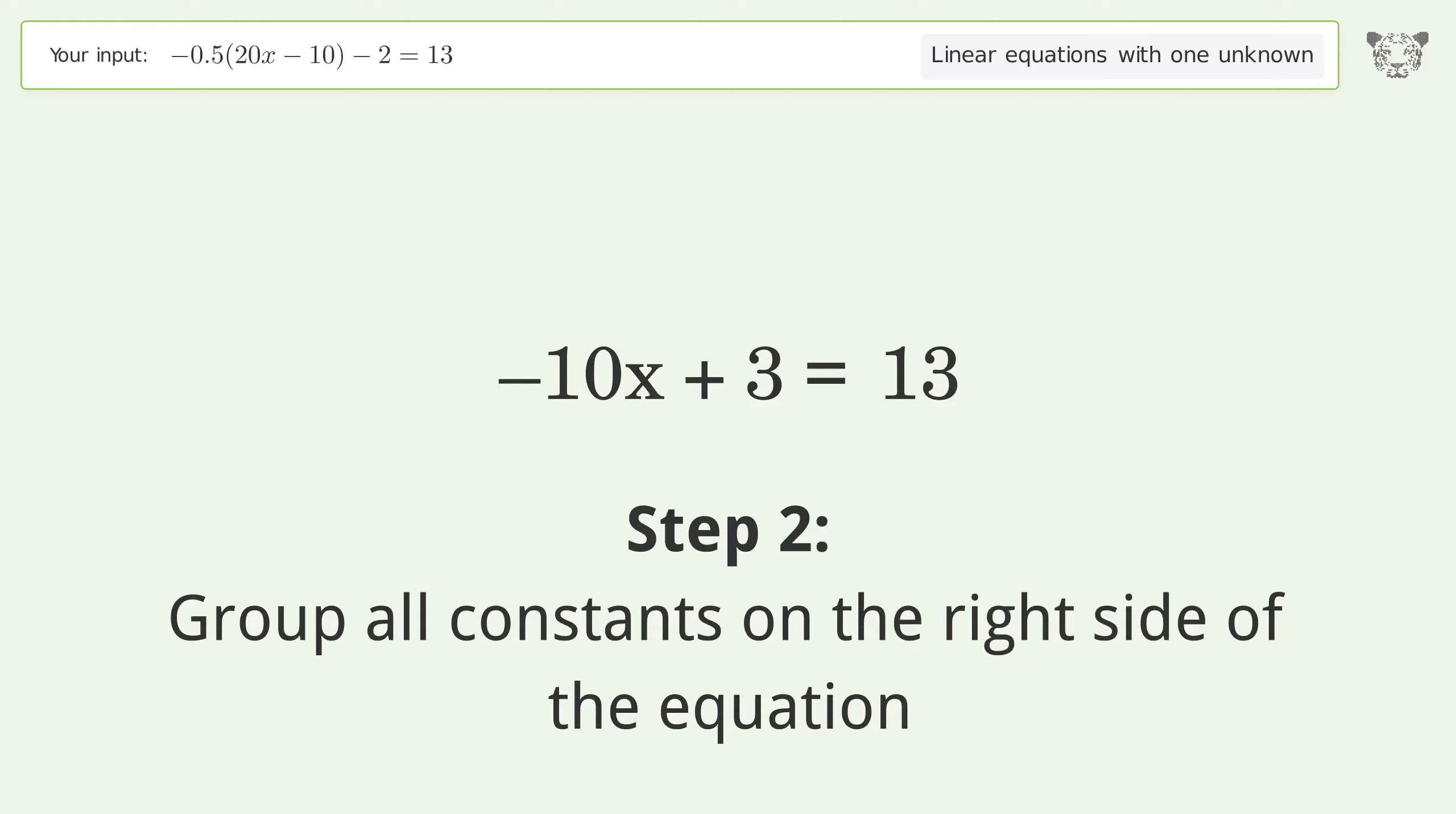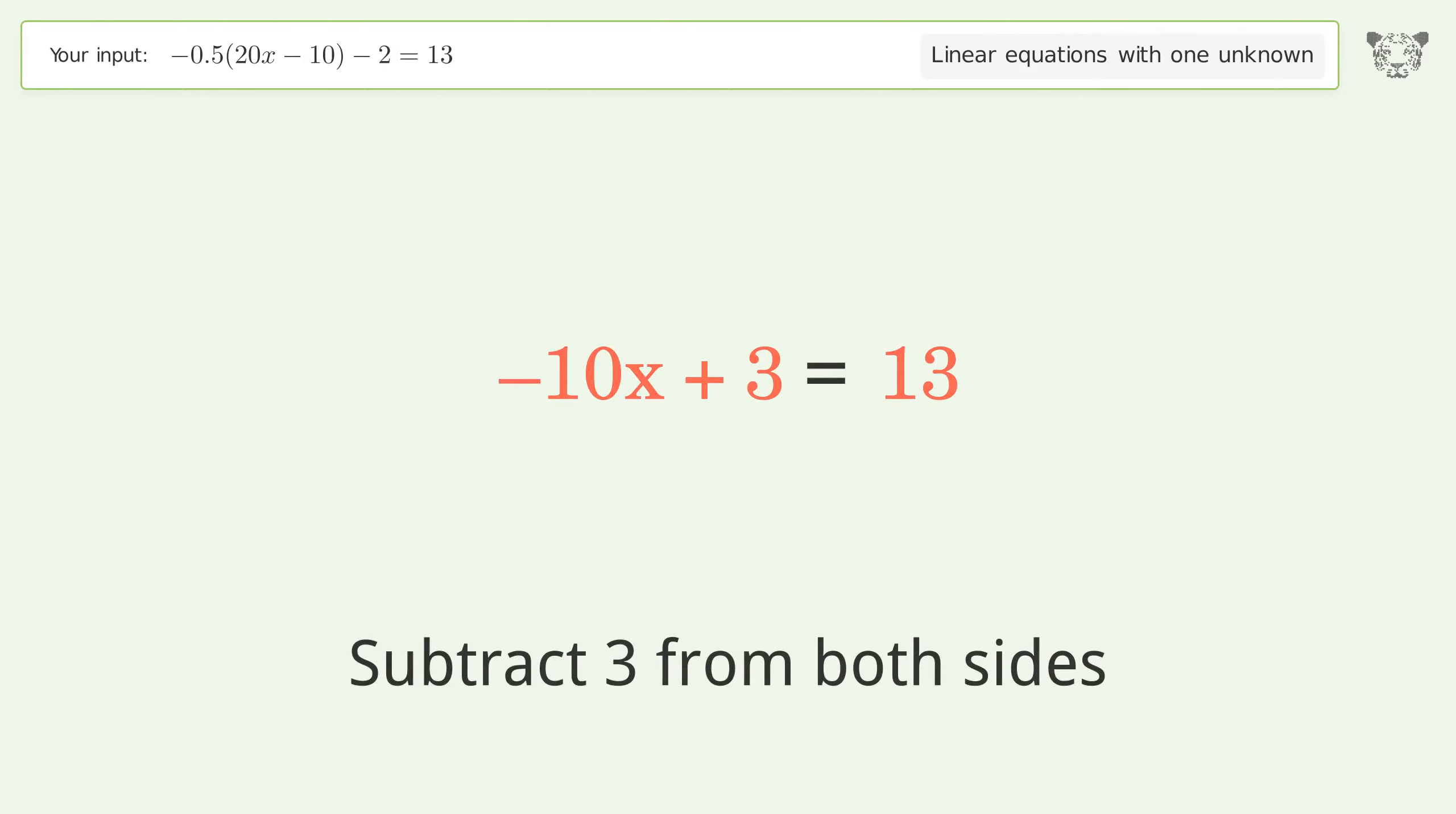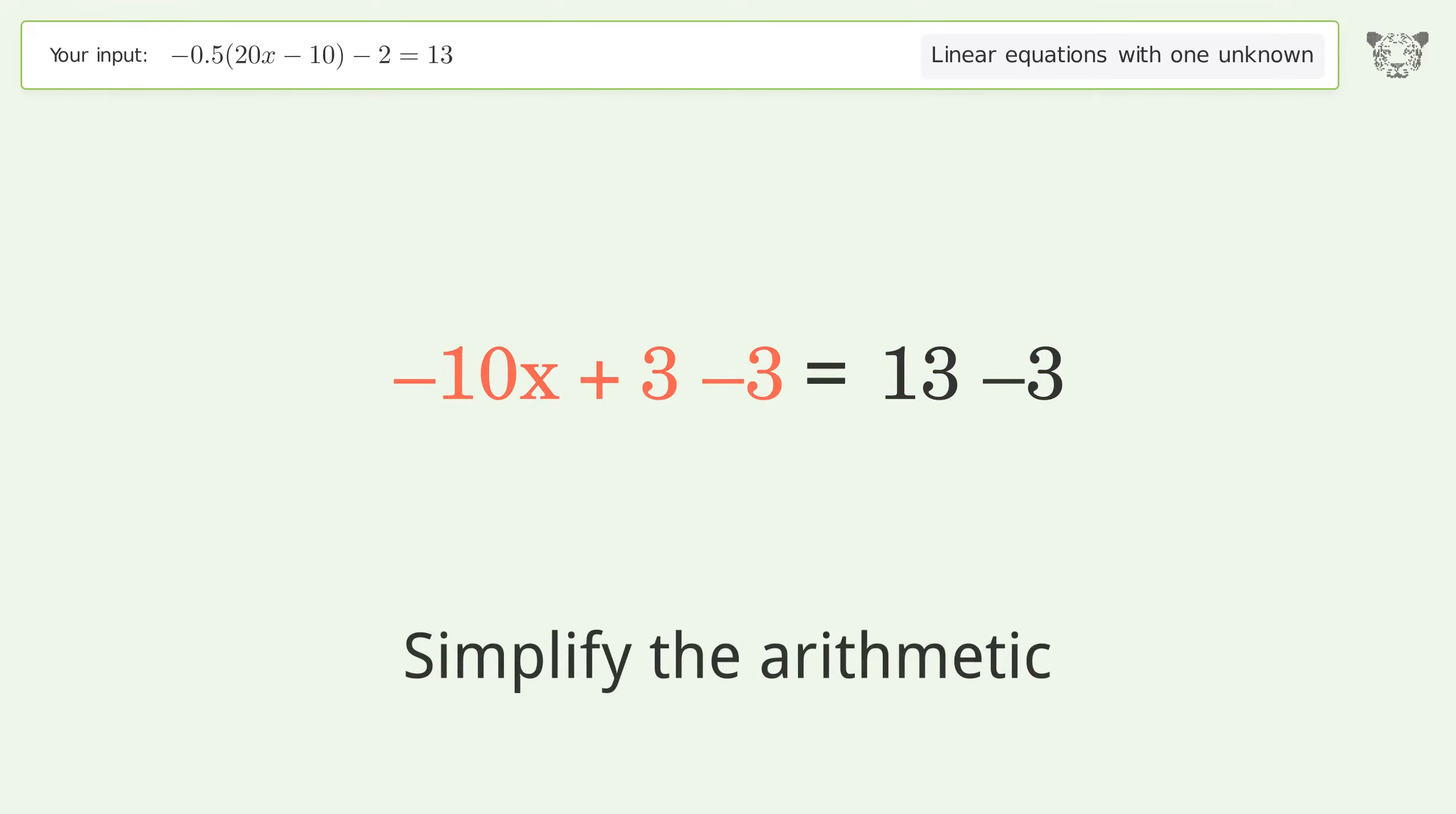Group all constants on the right side of the equation. Subtract 3 from both sides. Simplify the arithmetic.